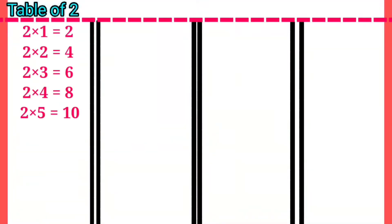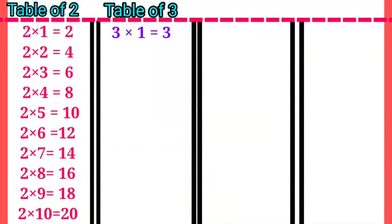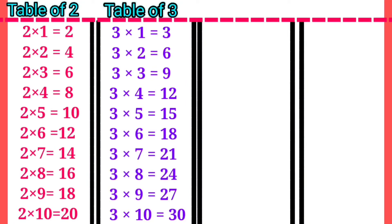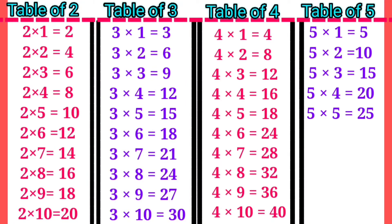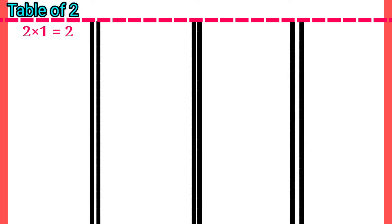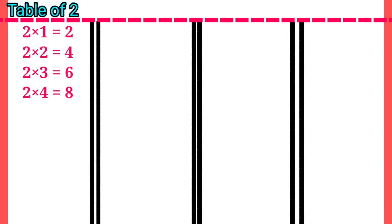Multiplication Table. Table of 2: 2×1=2, 2×2=4, 2×3=6.